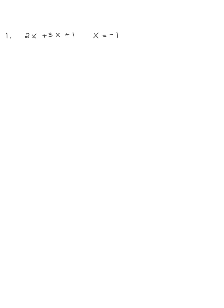For problem one, we have 2x plus 3x plus 1 to be evaluated at x equals negative 1. You could simplify this expression first, or just put parentheses around both locations for the x's and then put in negative 1. When we simplify, we multiply, which gives us negative 2, plus a negative 3, which I'll make minus 3, and then plus 1 at the very end. So that's negative 5 plus 1, giving me my answer of negative 4.